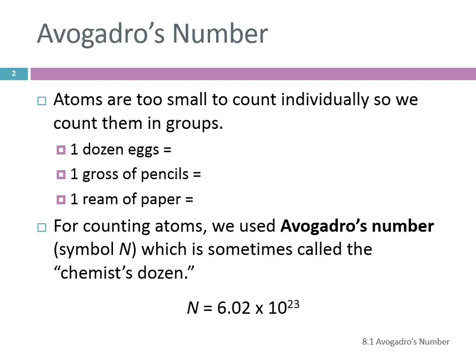A dozen eggs is 12 eggs, and a gross of pencils is 144. How many pieces of paper in a ream? 500. So we count other things in groups too, because who wants to count 500 pieces of paper? For counting atoms, instead of using 12, 144, or 500, we use Avogadro's number, which is sometimes called the chemist's dozen.